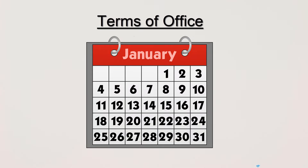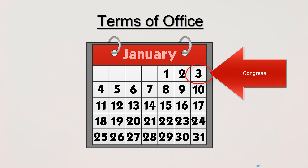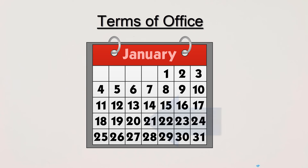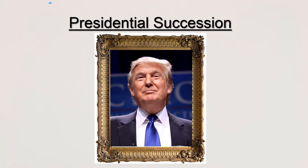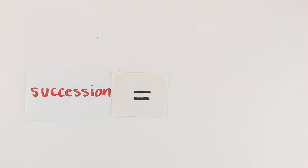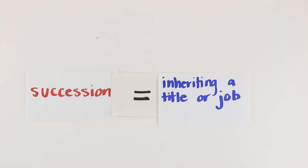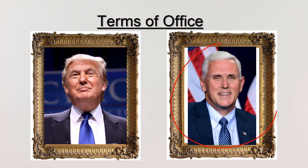The 20th Amendment takes care of two different pieces of business. First, it sets the dates for the terms of office. Congress begins their term on January 3rd. The President's term begins on January 20th. Second, the 20th Amendment goes over presidential succession. Succession means inheriting a title or job. In this case, the vice president succeeds as president if the current president is unable to finish his term.